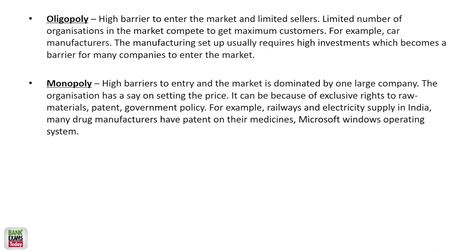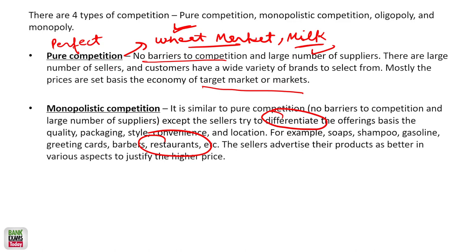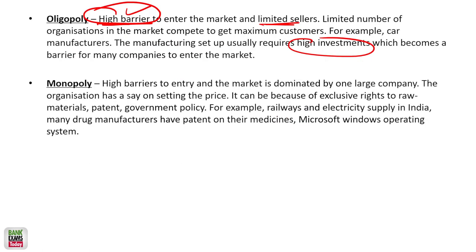What is oligopoly? A good example of oligopoly is car manufacturers. There are a handful of car manufacturers in India — Honda, Hyundai, MG Motors, Tata Motors — like 7-8 manufacturers. You can count them on your fingers. That is oligopoly. There are high barriers to entry in the market — it requires huge investment.